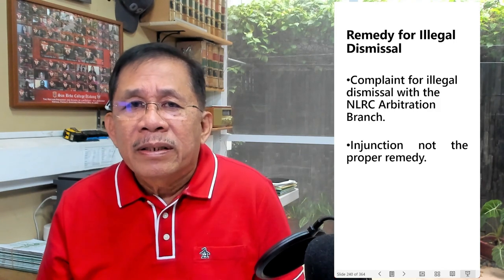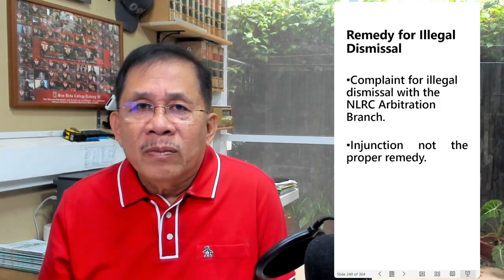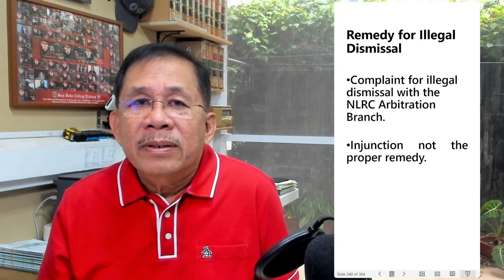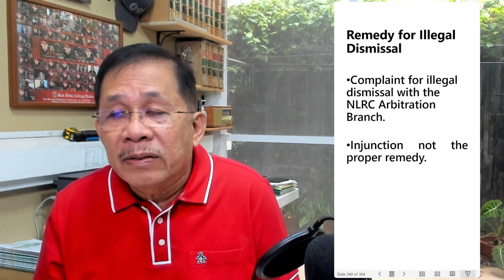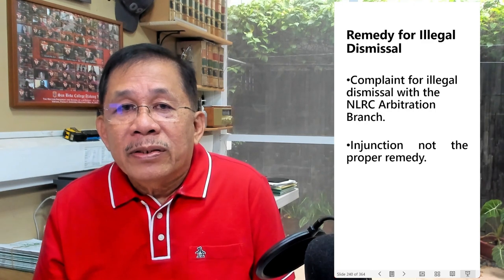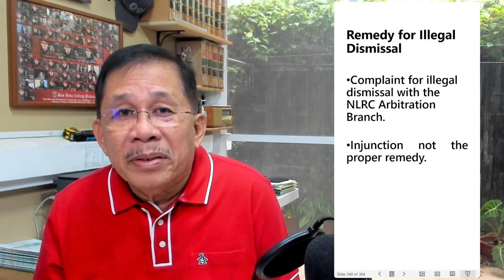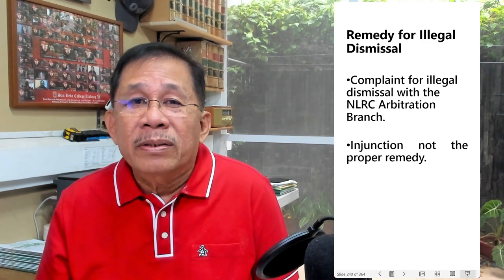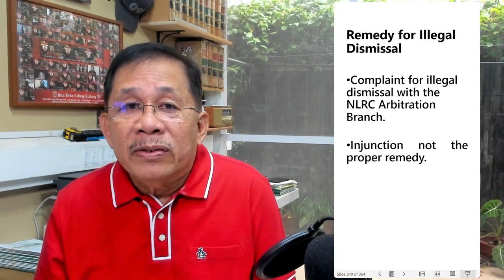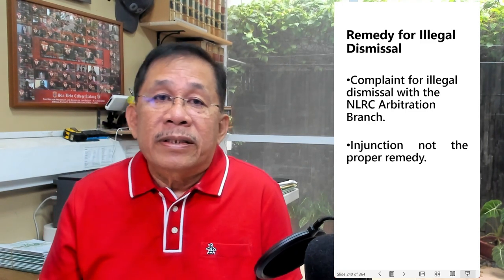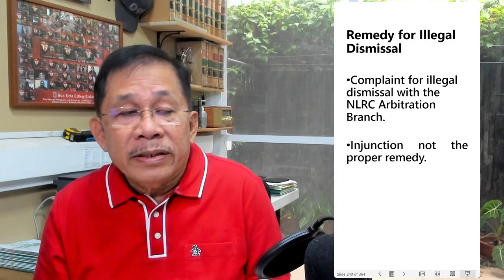If an employee is illegally dismissed, what would be his remedy? The remedy is a complaint for illegal dismissal filed with the arbitration branch of the NLRC. Injunction is not the proper remedy because injunction is not a cause of action but merely a provisional remedy. This is illustrated by the case of PAL versus NLRC.